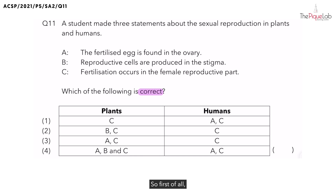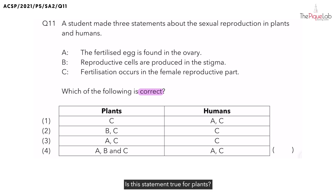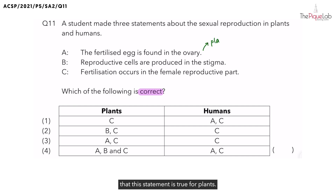Let's look at Statement A: 'The fertilized egg is found in the ovary.' Is this statement true for plants? Yes. We know that fertilization occurs in the ovary and the fertilized egg will be found in the ovary. So Statement A is true for plants.